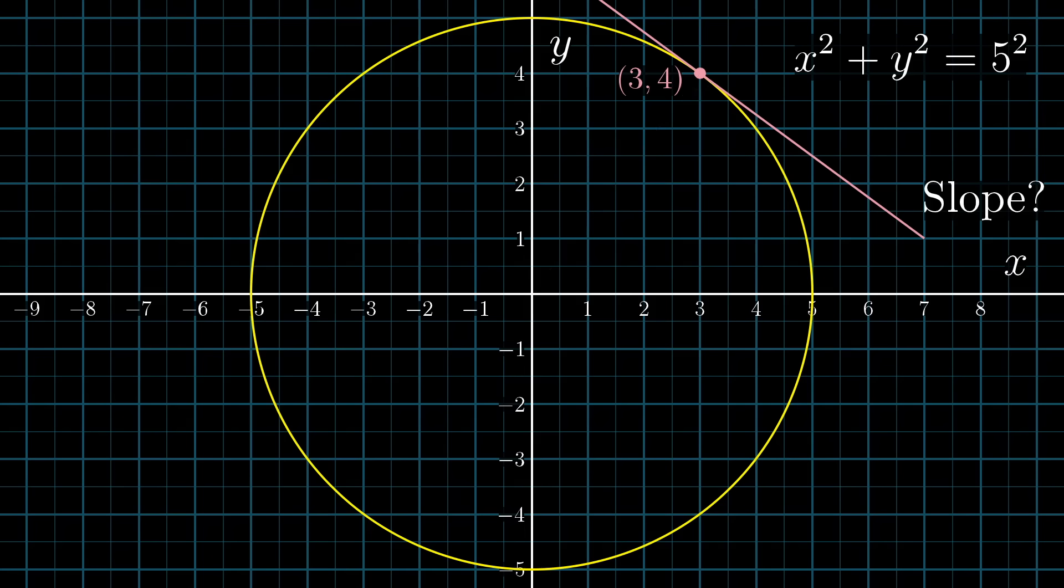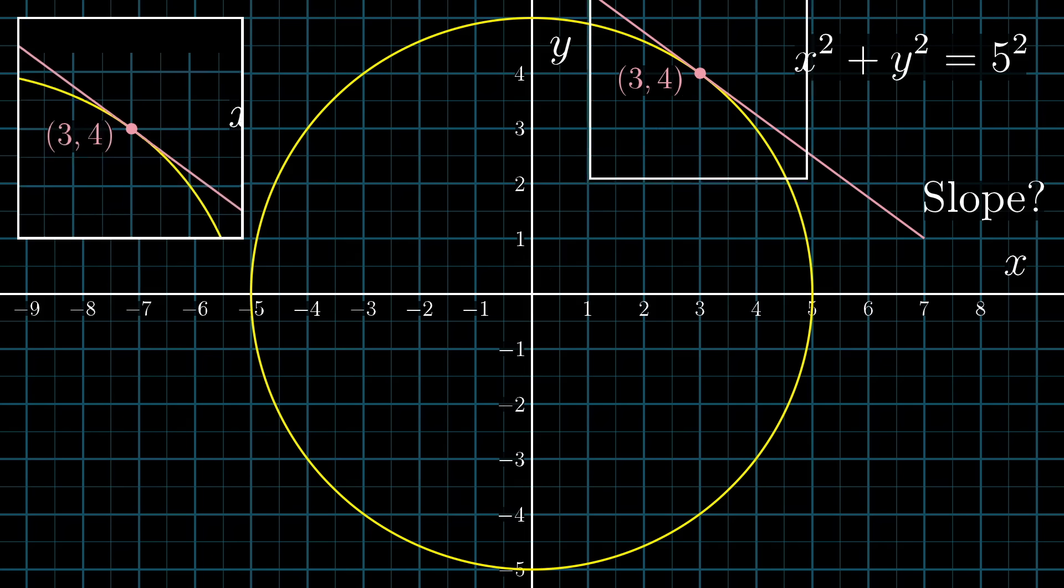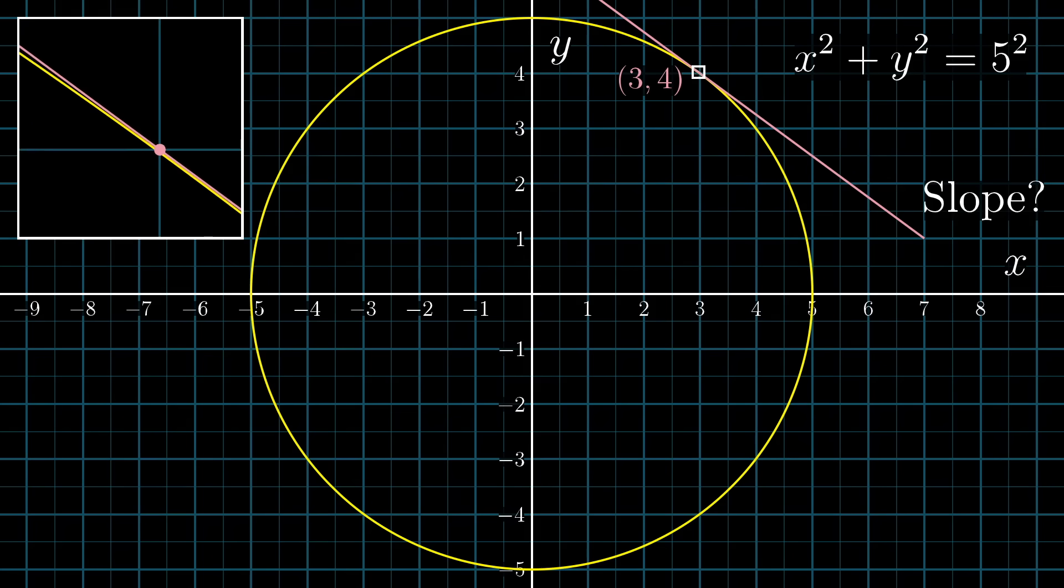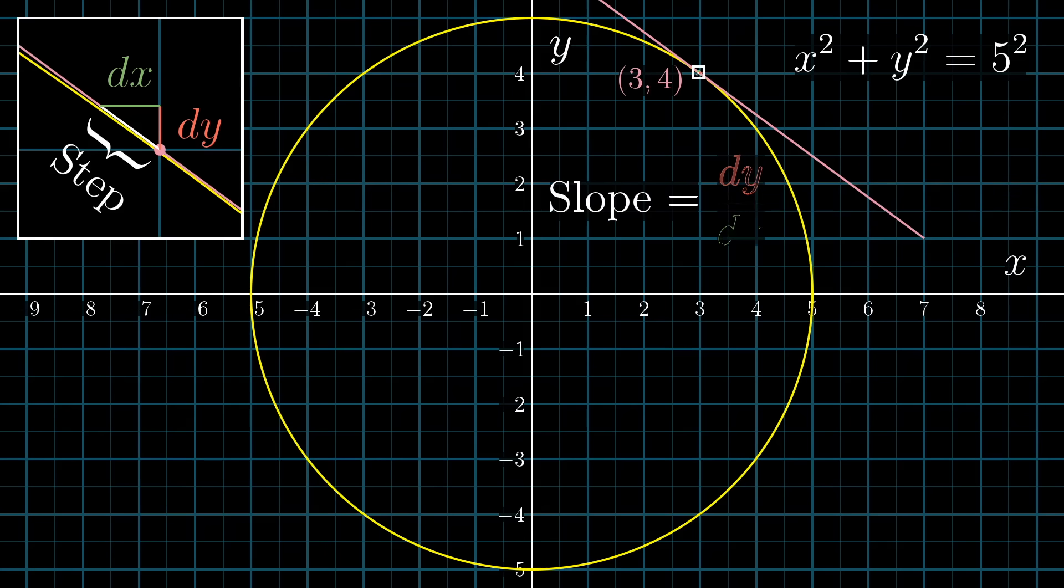As with other problems about the slopes of tangent lines to curves, the key thought here is to zoom in close enough that the curve basically looks just like its own tangent line, and then ask about a tiny step along that curve. The y component of that little step is what you might call dy, and the x component is a little dx. So the slope that we want is the rise over run, dy divided by dx.